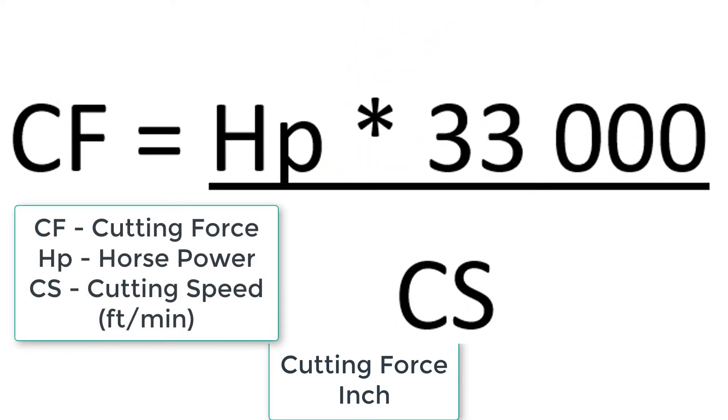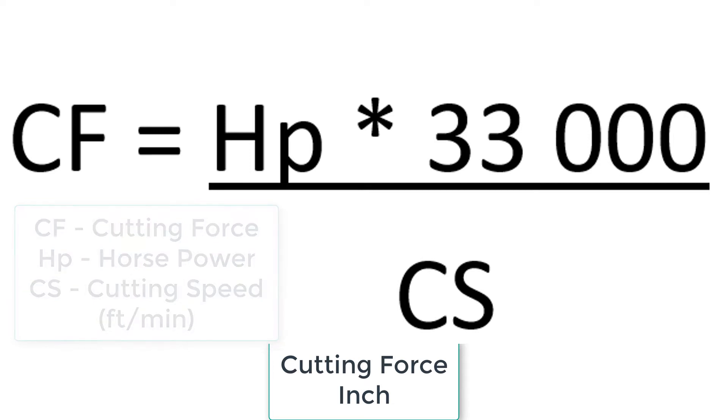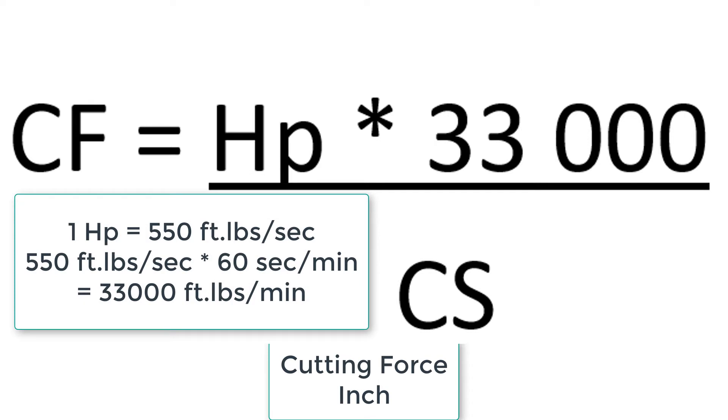In this equation CF equals the cutting force, HP is the horsepower, and CS is the cutting speed. The 33,000 is a constant.